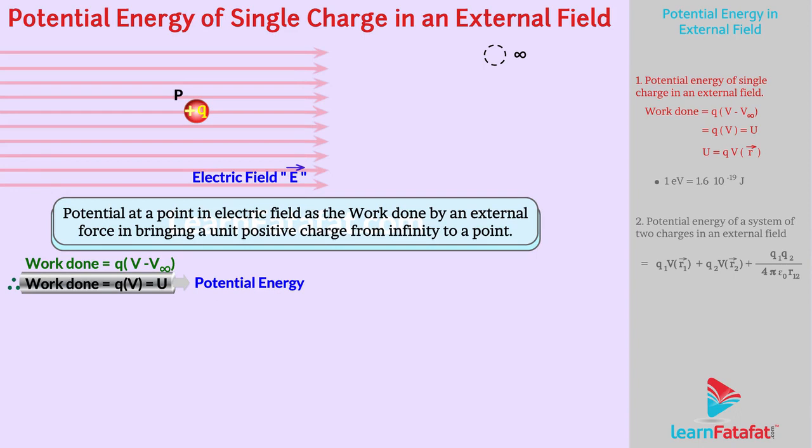With respect to some origin, if we consider R as the position vector of point P, then potential energy at P due to external electric field is U equals to Q into V of R, where V of R is external potential at point P having position vector R.